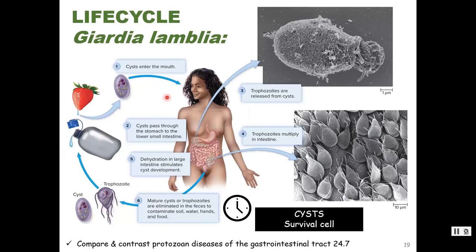Looking at the life cycle: transmission normally occurs through water, but also through unwashed fruits and vegetables. The cysts are the infective stage because the cyst wall allows them to survive the acidity of the stomach. In the small intestine, they latch onto the mucosa with those ventral suckers and multiply. As they make their way to the large intestine, they encyst. In the stool you can have both trophozoites and cysts, but it is only the cyst form that is infective.